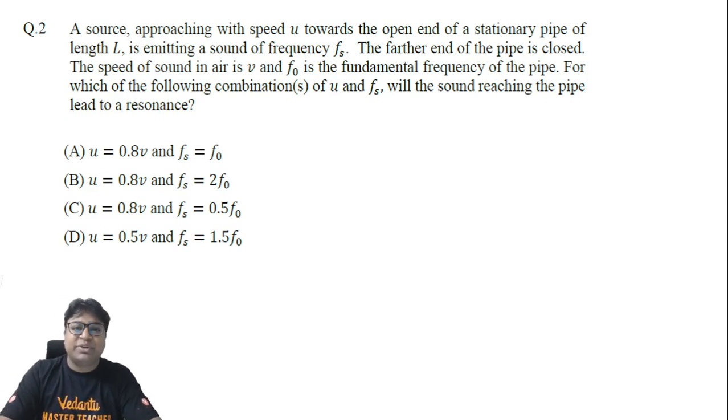All right students, this is question 2 of paper 2 of JEE Advanced 2021. This question says that a source is approaching with speed u towards the open end of a stationary pipe.